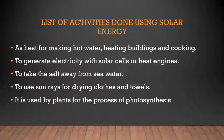Solar energy is used by plants for the process of photosynthesis. Plants are the producers in our ecosystem. We get our food from the plants, and any animals are also dependent on plants for food. Plants produce food by the process called photosynthesis — they use solar energy to make food.